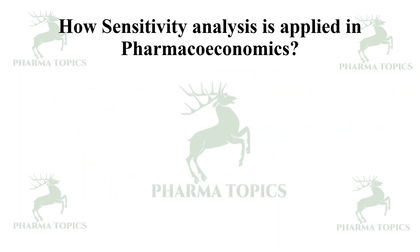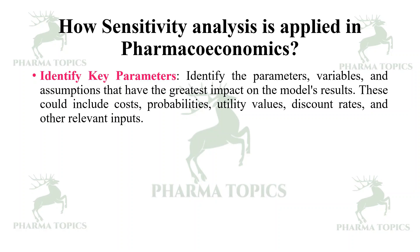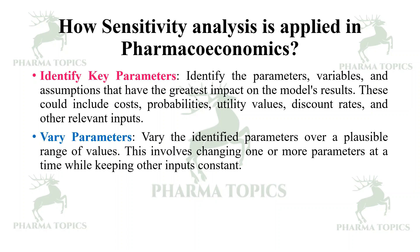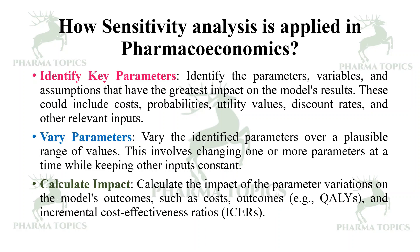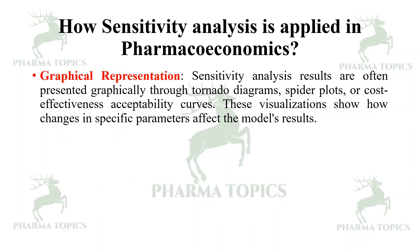How is sensitivity analysis applied? First, identify the key parameters — the variables and assumptions that have the greatest impact on the model's results, including costs, probabilities, utility values, discount rates, and other relevant inputs. Then vary the parameters over a possible range of values, changing one or more parameters at a time while keeping other inputs constant. Calculate the impact of parameter variation on the model's outcomes such as costs, QALYs, and incremental cost-effectiveness ratios (ICERs).